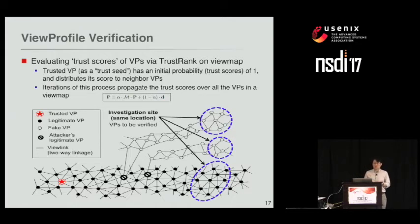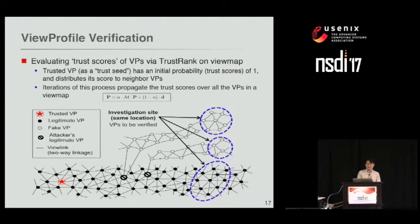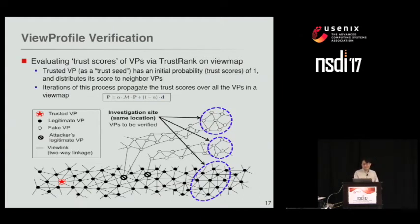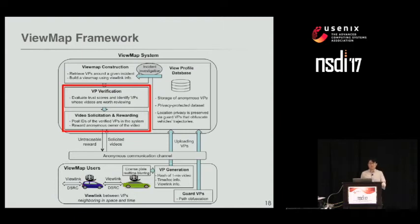We adopt a TrustRank algorithm, a variant of the PageRank algorithm. The trusted seed nodes have an initial probability of one, and trust scores are propagated over all nodes through the link structure. When we run TrustRank over the view map, legitimate VPs receive higher scores than fake nodes, allowing us to filter out fake VPs. Once the system identifies legitimate VPs, it posts their anonymized IDs publicly. Users check for a match with their own ID and, if matched, anonymously upload the original video.